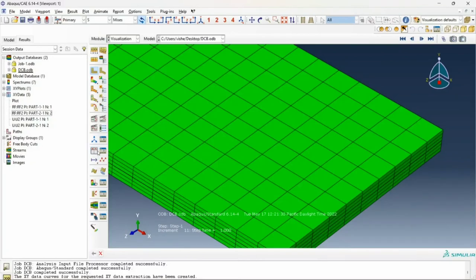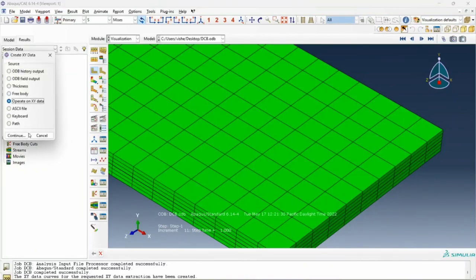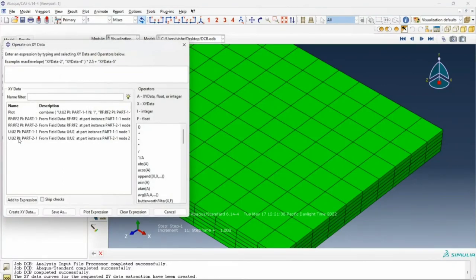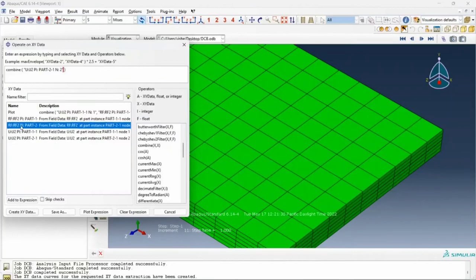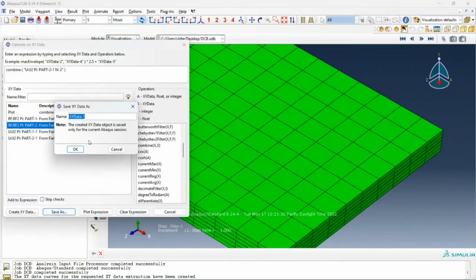But this is not where it ends. We will try to create a combined XY data of U and RF as well as export it to Excel and compare it with data from literature. For that, I click on create XY data, operate on XY data, click on continue. I choose the combine operator from here and I combine along the x direction U2 from part 2 and along the y direction RF2 from part 2. I say save as, I call this FD plot, click on OK.